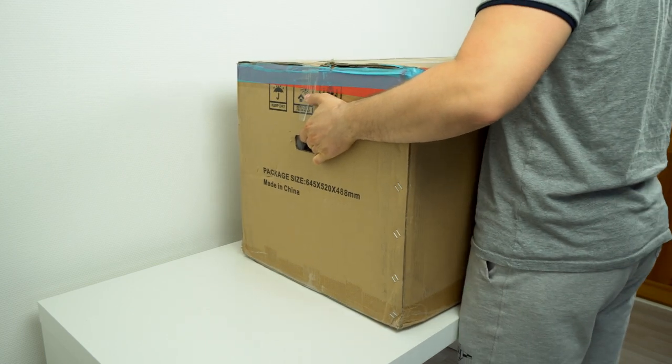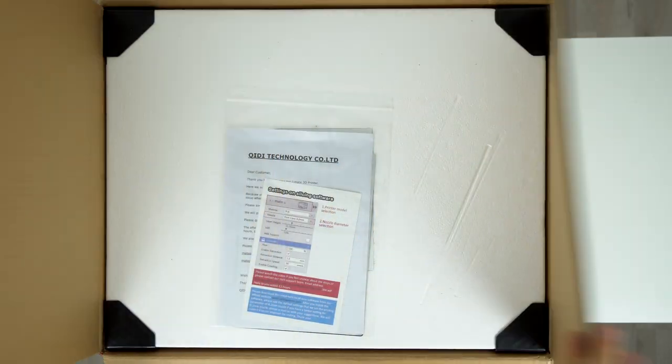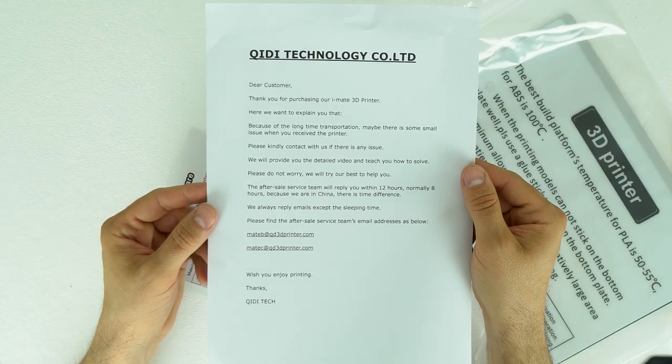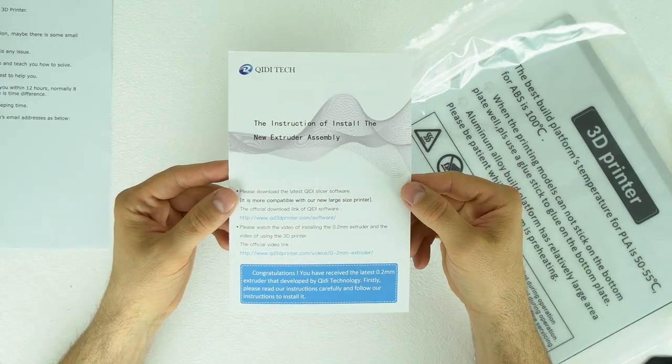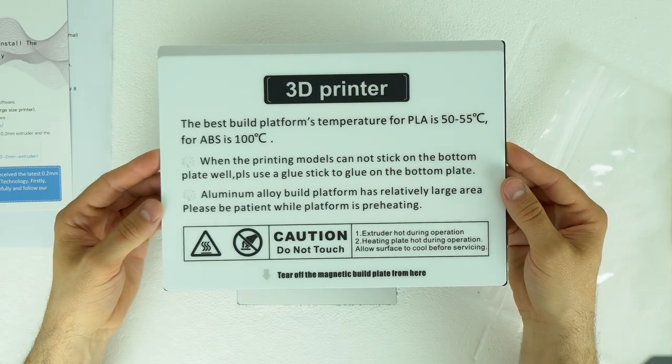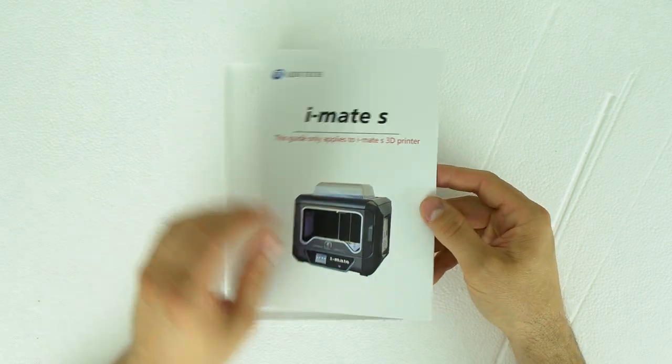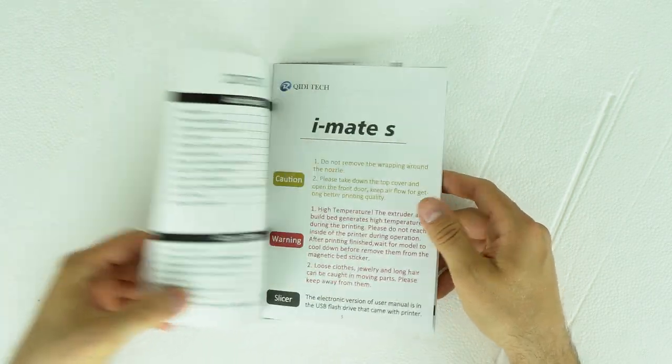Now let's do the quick unboxing and setup. This is the shipping box of the iMate and it's pretty large. Inside the shipping box you're gonna find a thank you note, quick instructions and video on how to install the extra 0.2mm extruder. Next we have an extra build plate. And there is a very nice and detailed color guide which is full of useful information.